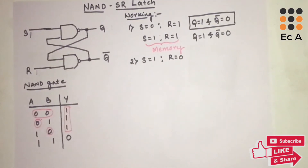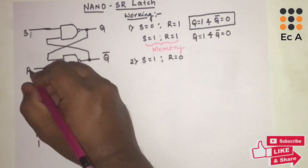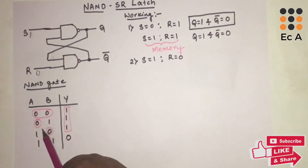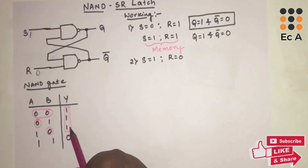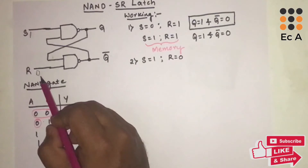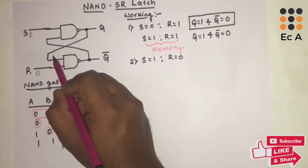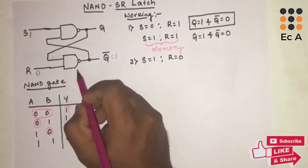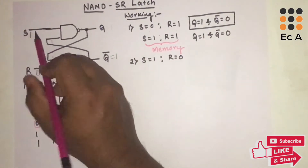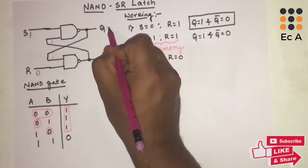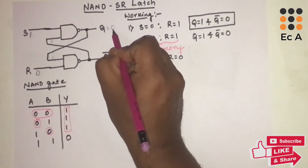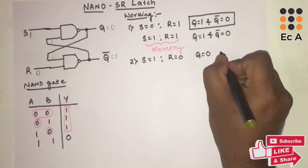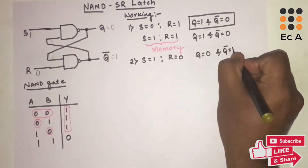Now let us take the second case where S=1 and R=0. Since R=0, irrespective of the other input, Q̄ will be equal to 1. This 1 feeds back to the first gate, so with both inputs being 1, Q becomes 0. So when S=1 and R=0, Q=0 and Q̄=1.